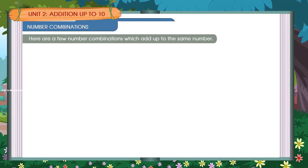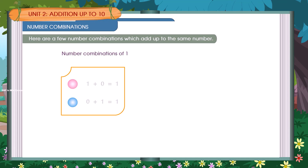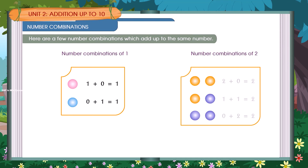Number combinations. Here are a few number combinations which add up to the same number. Number combinations of 1: 1 plus 0 is equal to 1; 0 plus 1 is equal to 1. Number combinations of 2: 2 plus 0 is equal to 2; 1 plus 1 is equal to 2; 0 plus 2 is equal to 2.